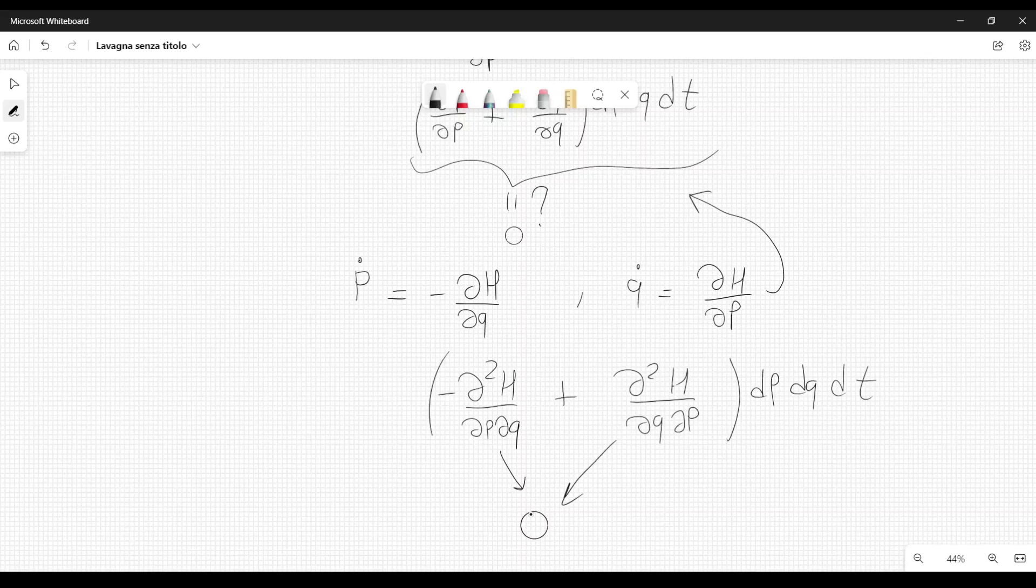The square does not distort. It does not get distorted. The conclusion is that the flow of this gas, quote-unquote gas, of systems in phase space behaves like an incompressible fluid.